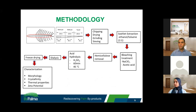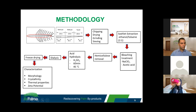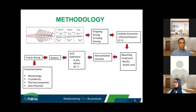Here is the methodology on how the CNC is prepared from OPF. This is the illustration of one single oil palm frond. Firstly, the leaves were removed and then the frond was cut into three different parts: the top, the middle, and the bottom parts. The OPF samples were then chipped and dried in the oven to remove moisture content. After that, they were ground and sieved before being further used for the extraction process.